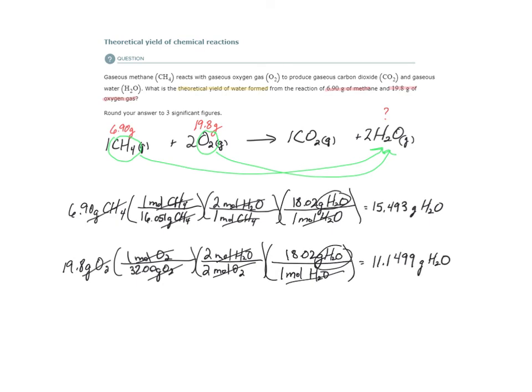So what have we just found? We found the maximum amount of water we can make from each of these two reactants. From this 6.9 grams of methane, I have enough methane to make 15.493 grams of water. We're not looking at oxygen, just looking at the amount of methane we have. Now let's look at oxygen and forget about methane. I have enough oxygen to make 11.15 grams of water.